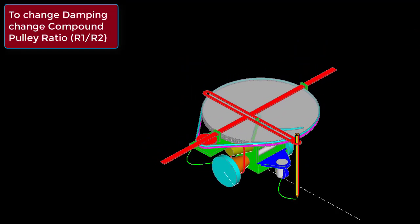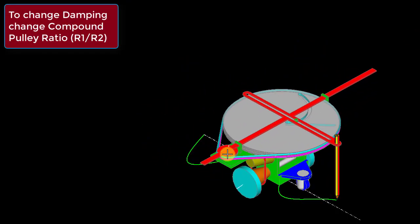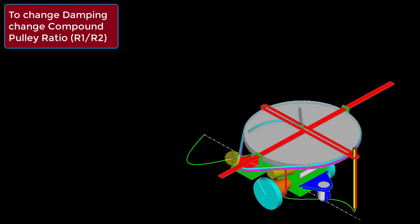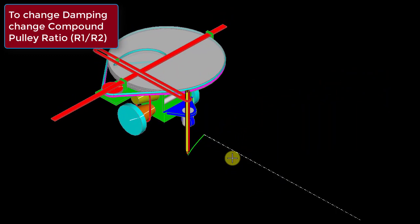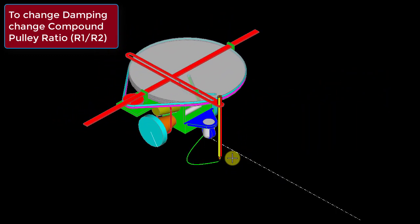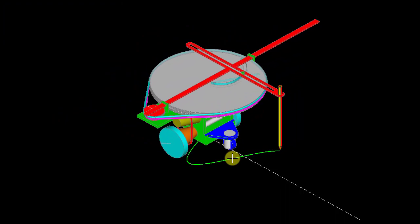How to change the damping? Just change this pulley, this pulley over here, just have a different ratio of the top and bottom disc radii and that will change the damping. Thank you.